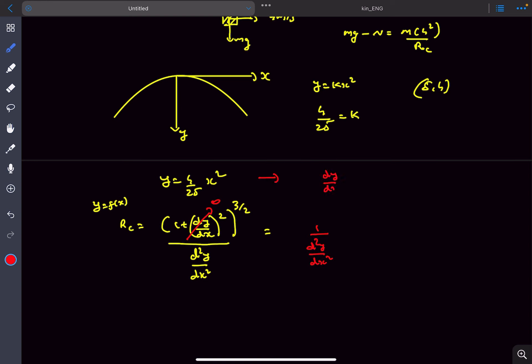If you differentiate it once, you'll get the answer as 8x by 25 and the double derivative is coming out to be constant, which is 8 by 25. So the radius of curvature would become 25 by 8 meters at the topmost point.